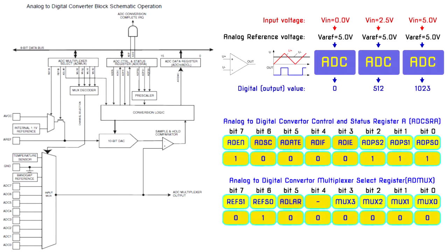First of all we need to enable the ADC feature. The ADC control and status register allows us to enable the ADC and set the sampling rate. We set the division factor between the oscillator frequency of 16 MHz and the input clock to the ADC as 128. We select channel 0 by default using the ADC multiplexer select register, and select the voltage reference for the ADC — in this case it is AVCC.